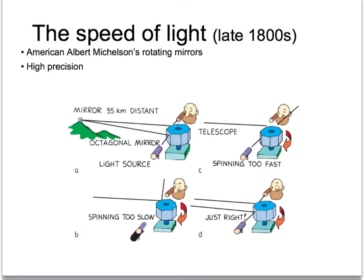In the late 1800s, a guy named Albert Michelson, who was an American physicist, used rotating mirrors and a mirror really far away to figure out the speed of light. He would try to get the mirrors to spin in just such a way that it would shoot the light into a little scope that he could look at.